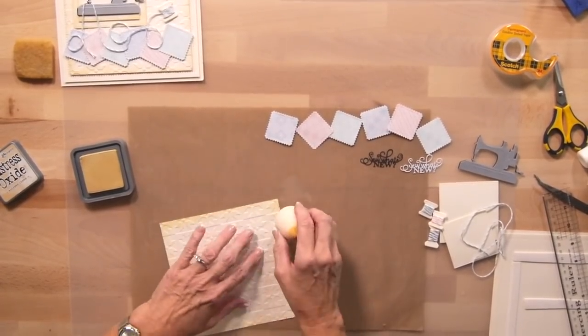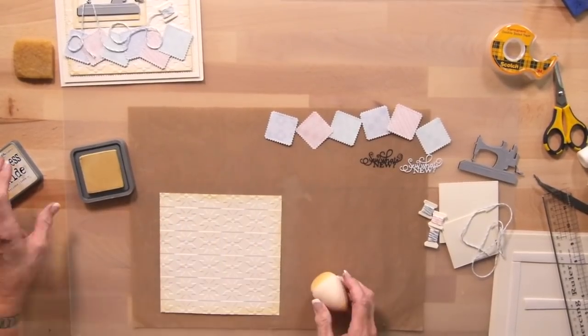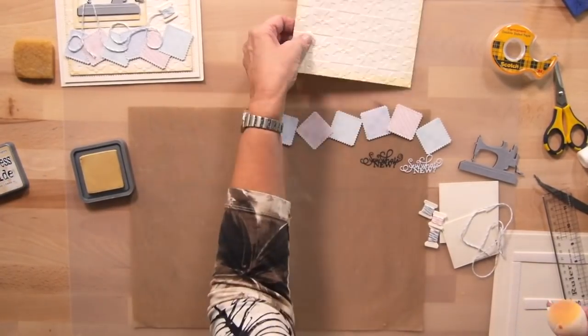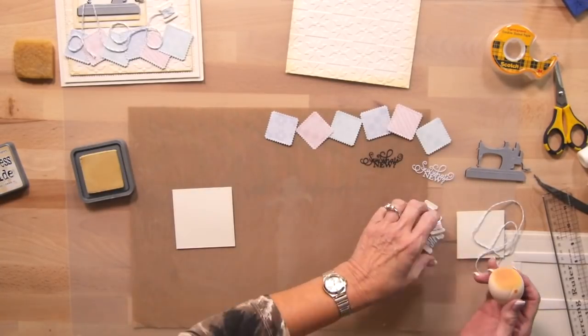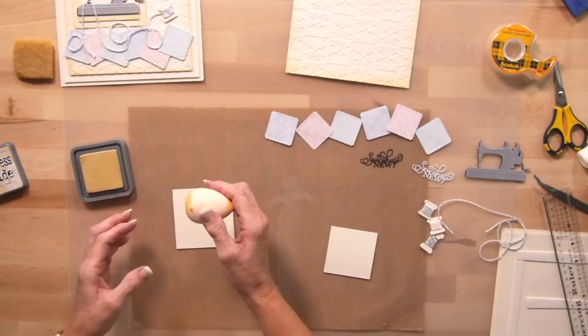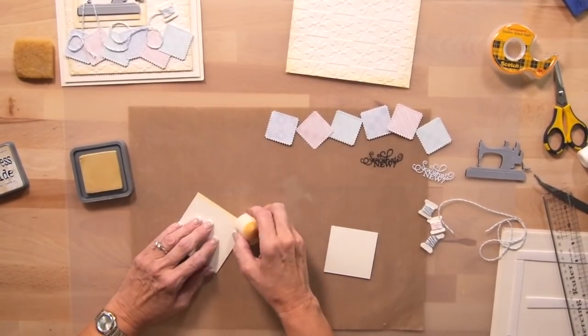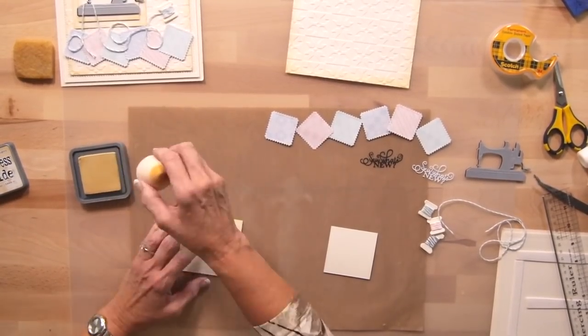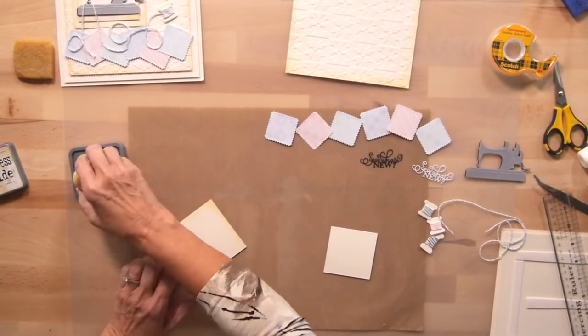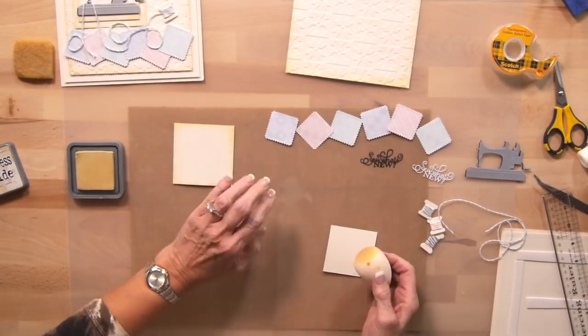There we go. And you kind of bring it in a little bit if you want a tiny bit more of that distressed look. And I'm going to set this aside just a moment. I've gone ahead and cut a couple of the double-stitched squares. So I want to edge those as well. I'm going to go around with the same ink. Give them a little bit of that same tone. So they won't look quite so stark new. It will give it a more vintage feel as well.